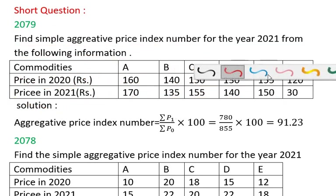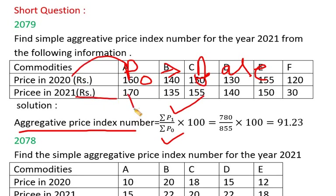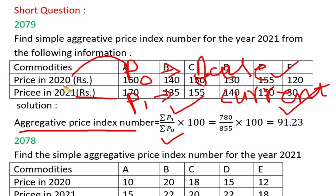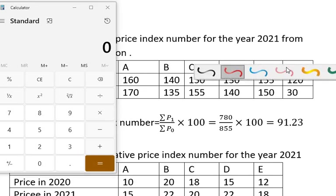The formula for the average price index number is: summation P1 by summation P0, multiplied by 100. P0 is the base year — the base year is the beginning year. Here, 2020 will be the base year, so P0 is 2020 and P1 is the current year 2021. Summation of P1 by summation of P0 multiplied by 100.